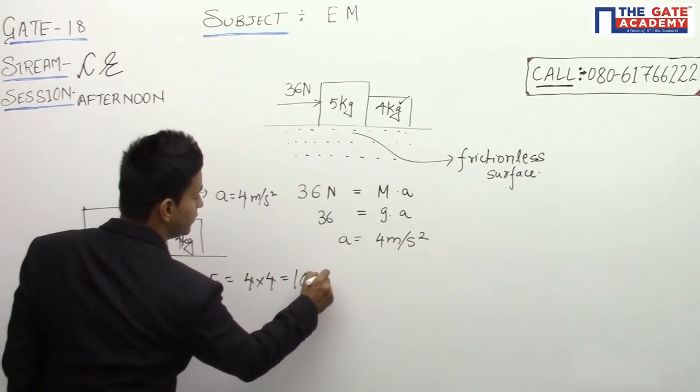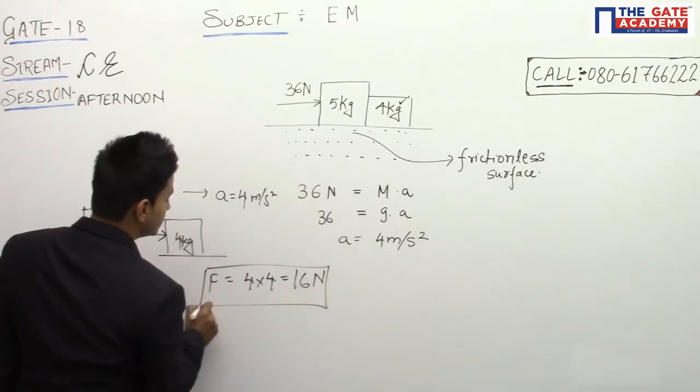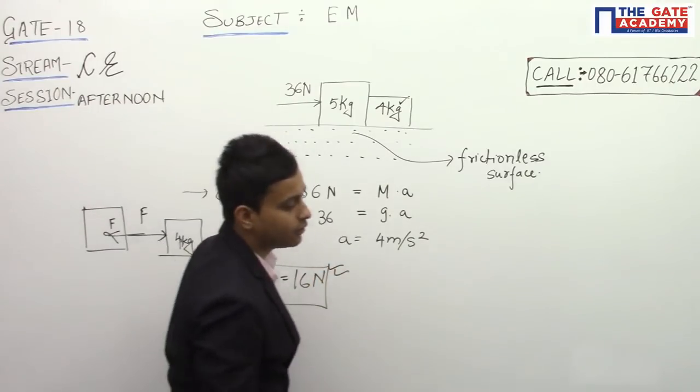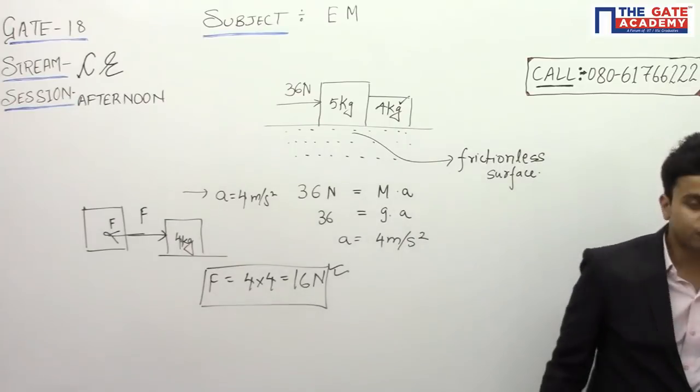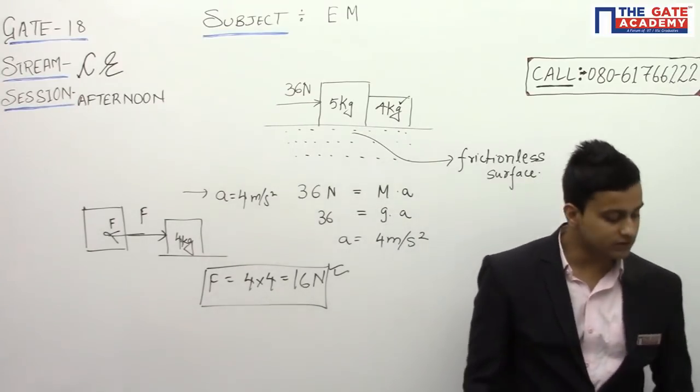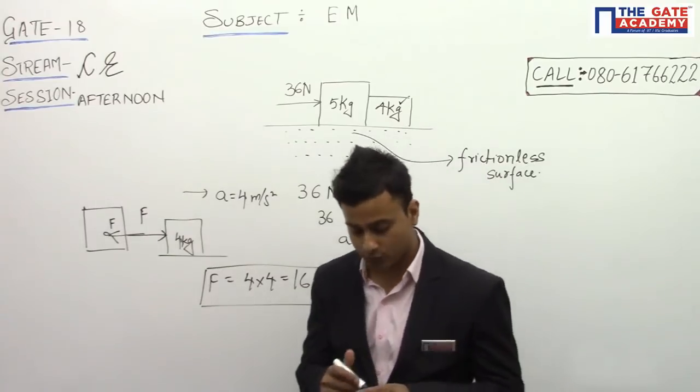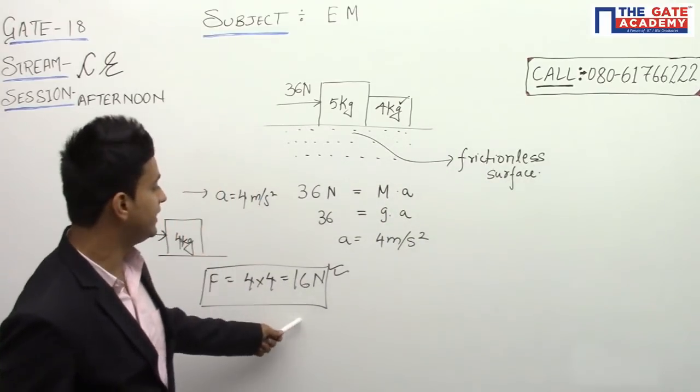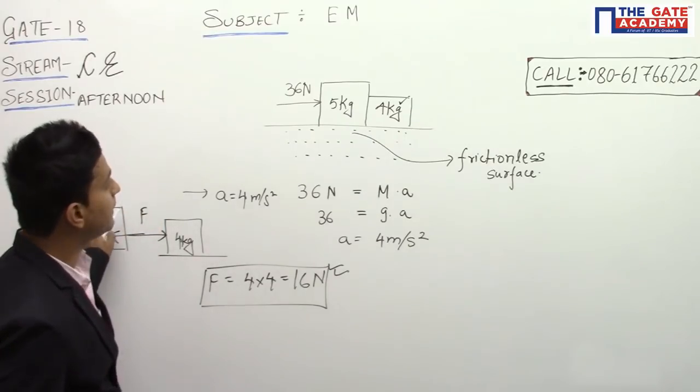be coming out to be 16 Newtons. So this is the answer. The options in the question given were: option A was 4 Newton, option B was 7.2 Newton, option C was 9 Newton, and option D was 16 Newton. The correct option is option D, that is 16 Newton. You can also check with the help of